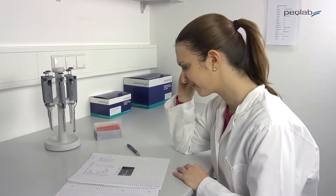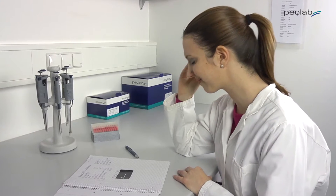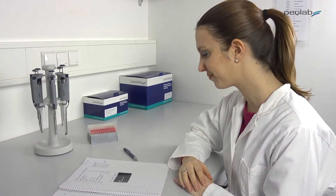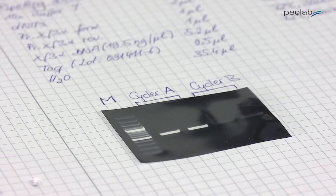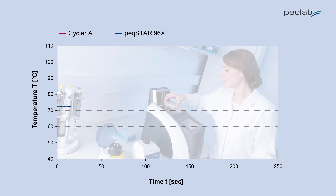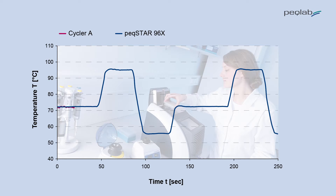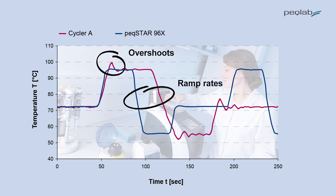When evaluating different thermal cyclers in your lab, you may see apparently identical PCR protocols producing different PCR results. Here's a comparison of the PCR temperature profile from a PECSTAR 96X and another well-known brand. Due to different control systems specific for each instrument, individual temperature profiles are produced, and this can have a drastic effect on the PCR results.